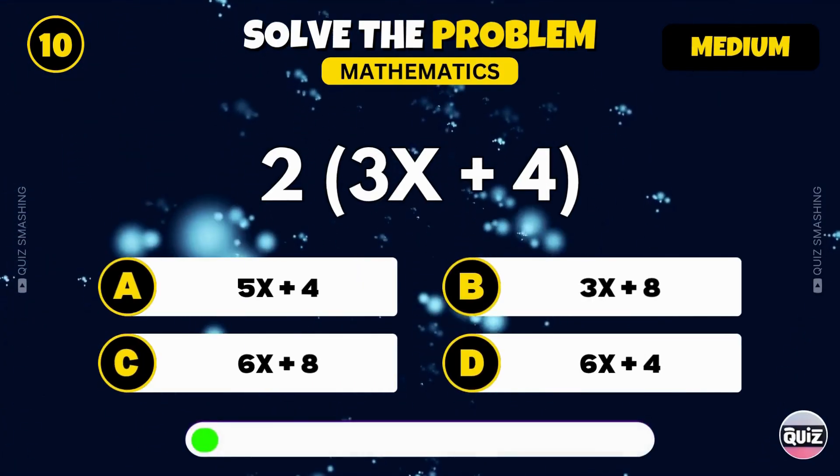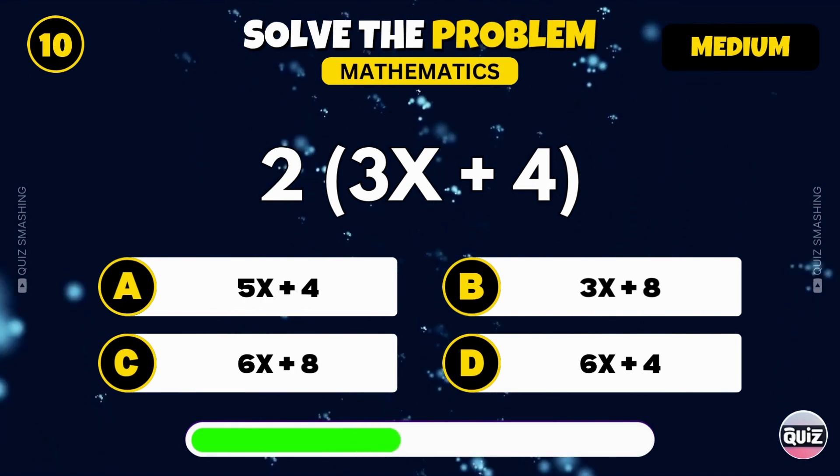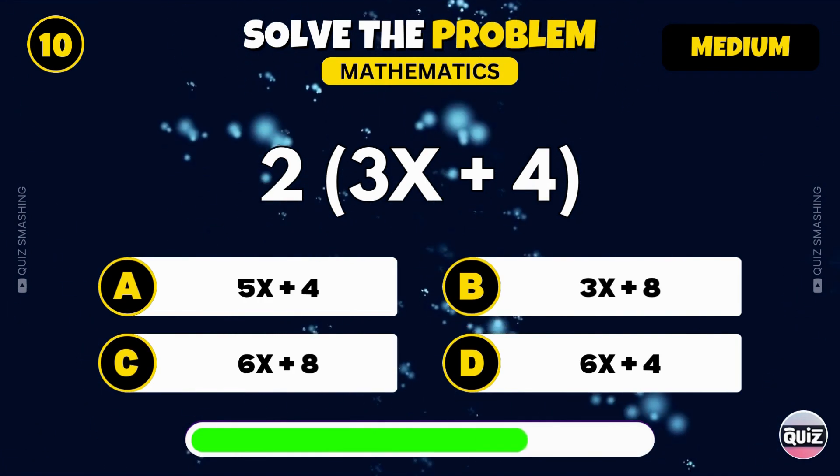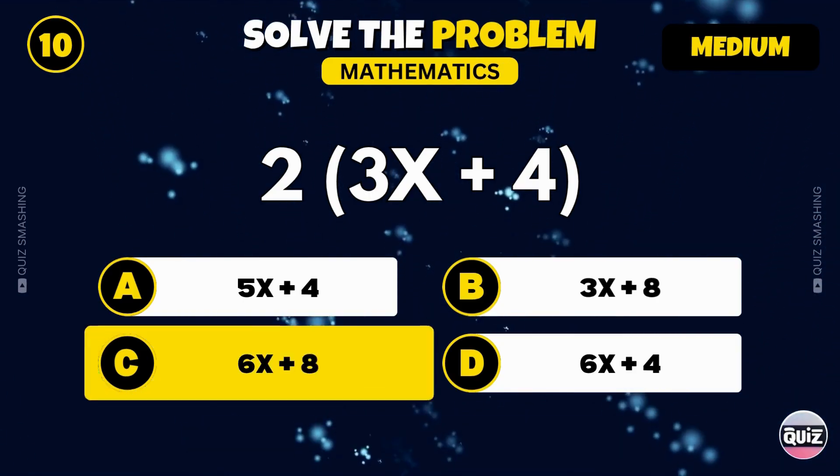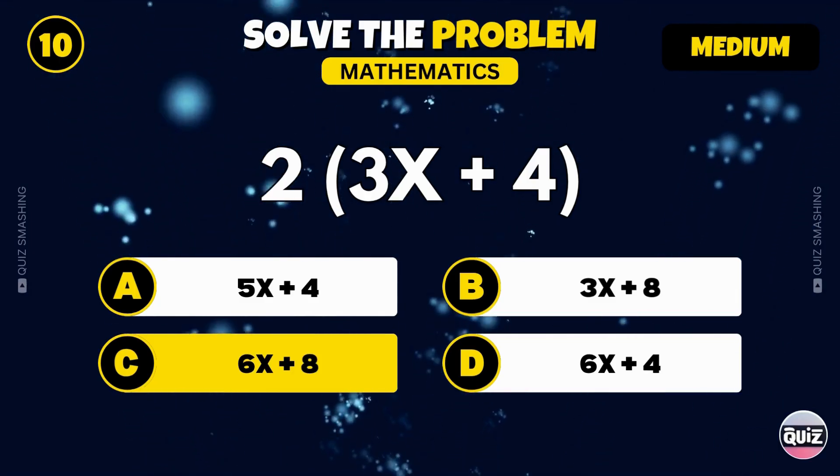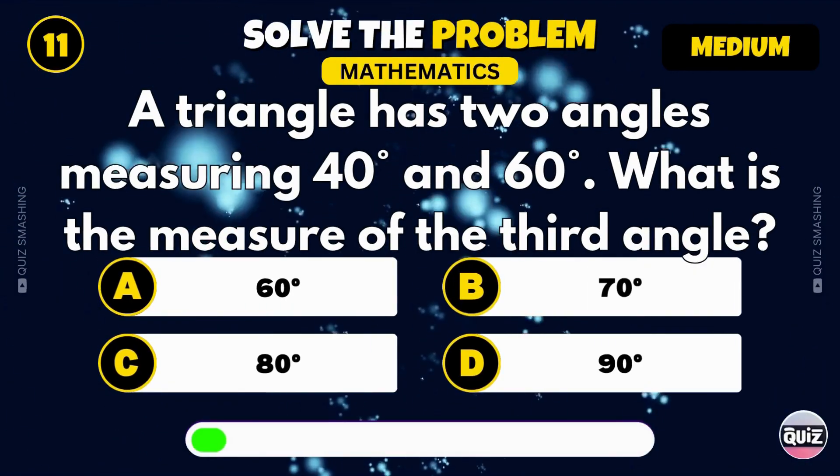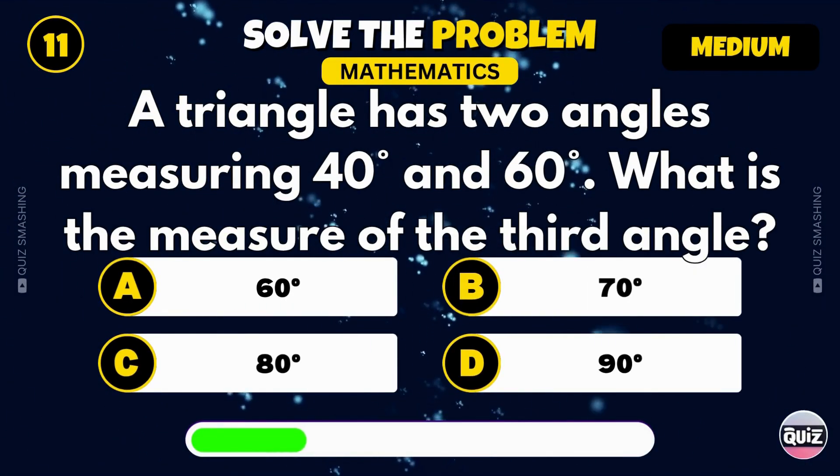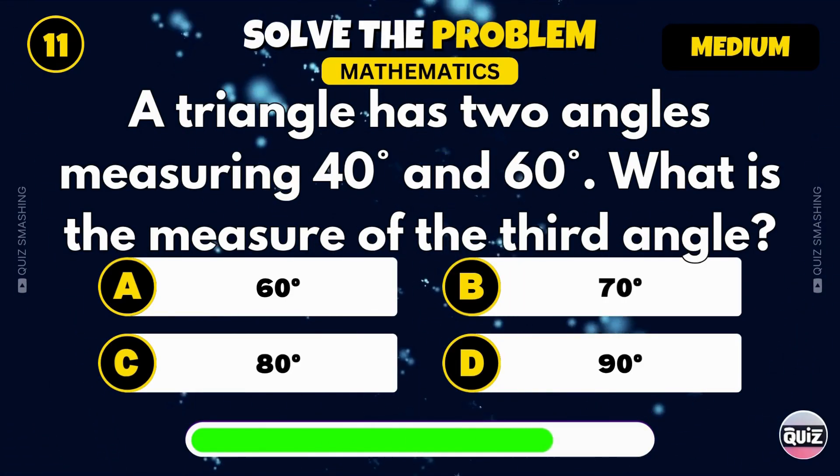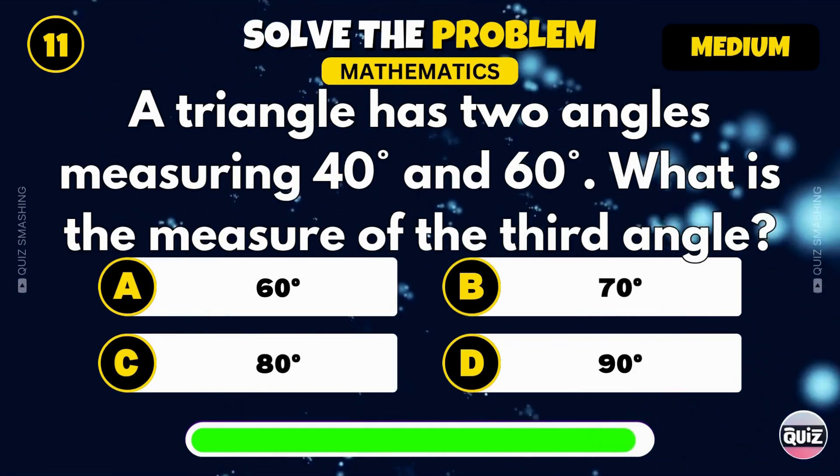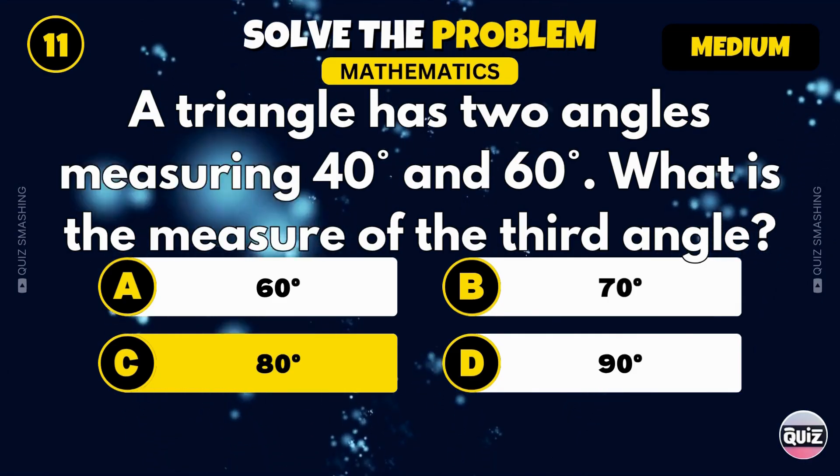Simplify 2 times open bracket 3x plus 4 close bracket. Well done, it becomes 6x plus 8. A triangle has two angles measuring 40 degrees and 60 degrees. What is the measure of the third angle? Yes, the third angle is 80 degrees.